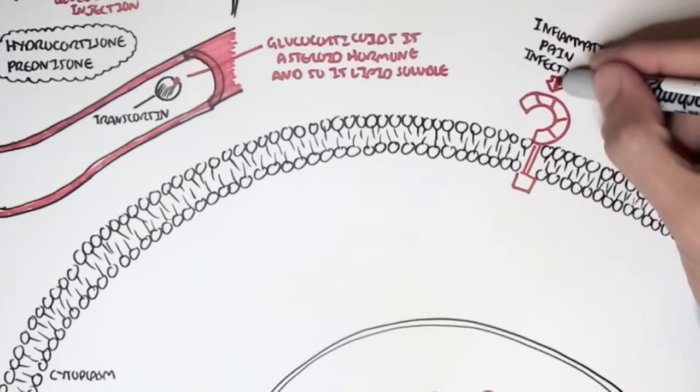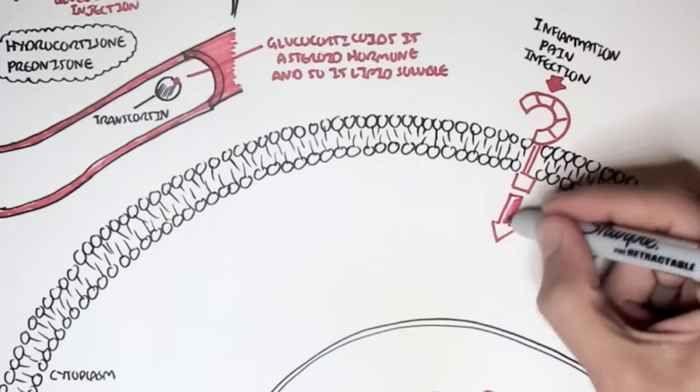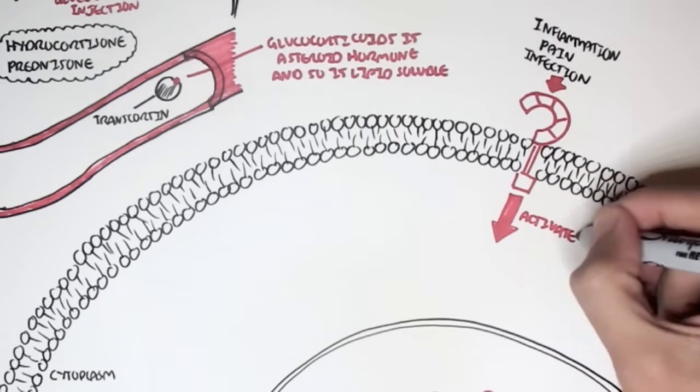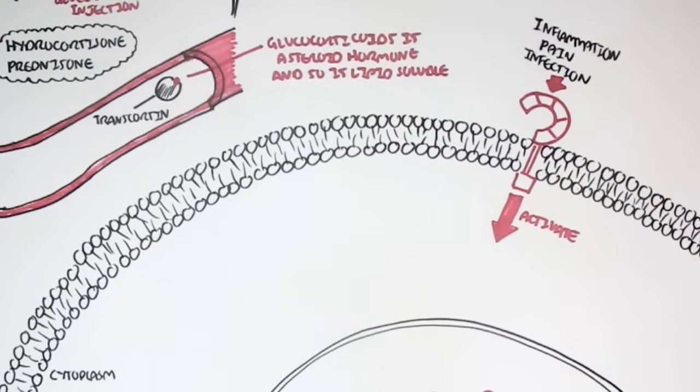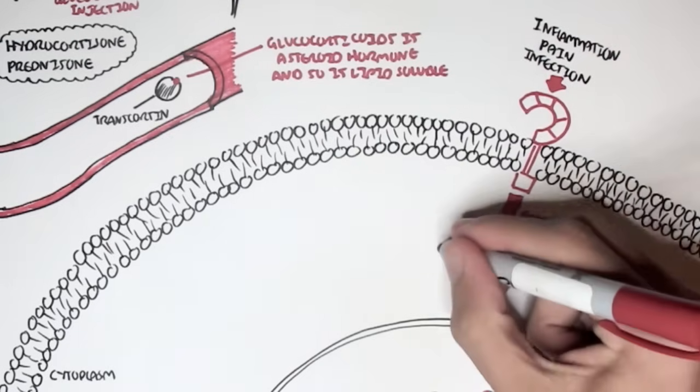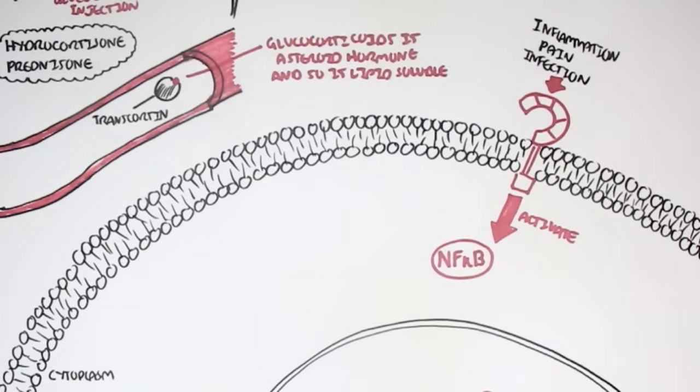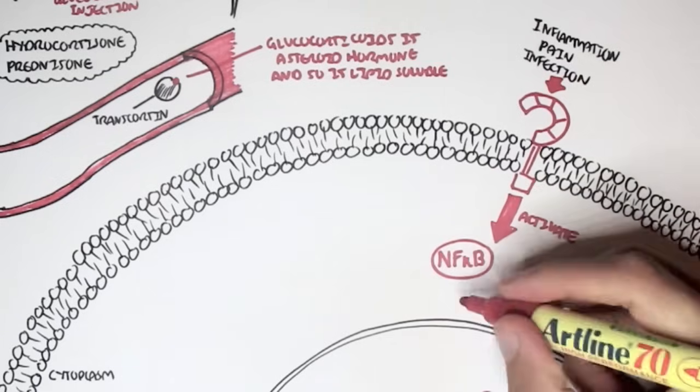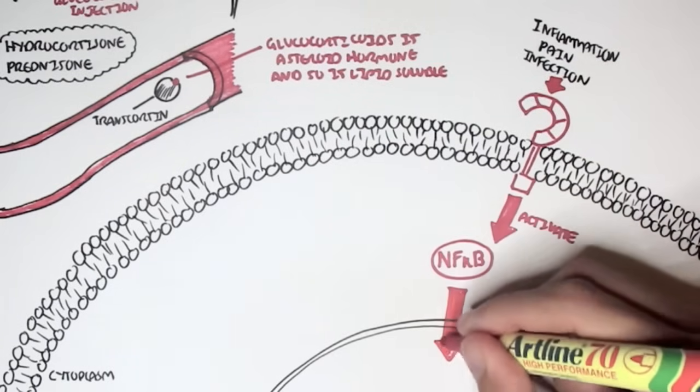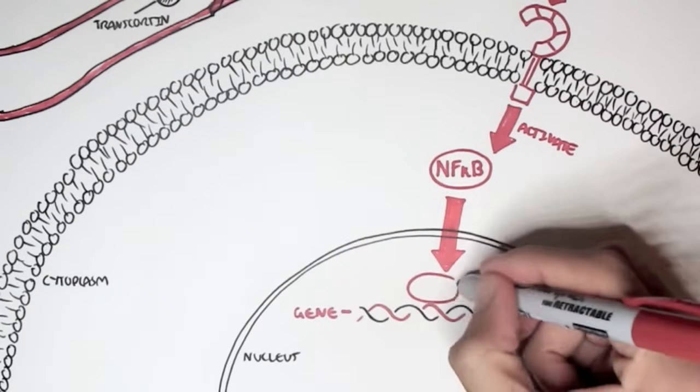So when we have pain, inflammation and infection, this will stimulate this cell through the receptors, by chemicals or something. And essentially this will activate Nucleofactor Kappa B within this cell.